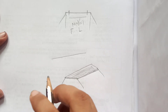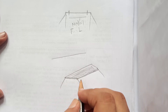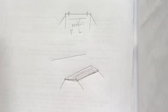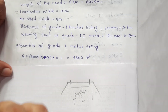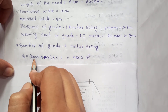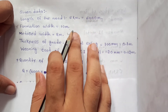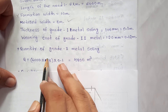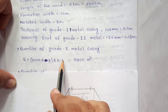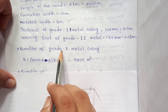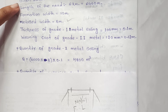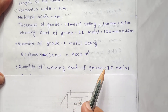The quantity is calculated as area multiplied by thickness. For Grade 1 metal soiling: quantity = length × width × thickness = 6000 × 8 × 0.1 m³.